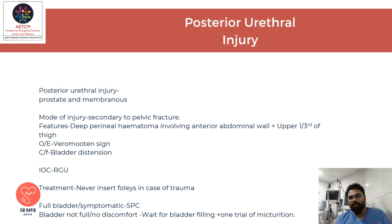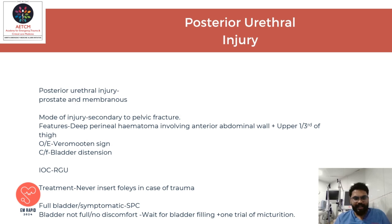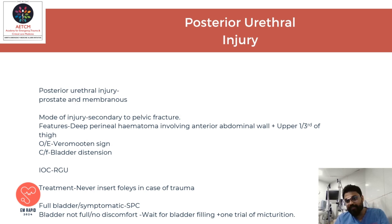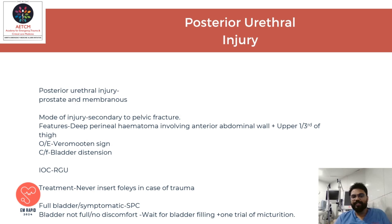The investigation of choice for posterior urethral injury is retrograde urethrogram. In the setting of trauma, never insert a Foley catheter if you are suspecting a urethral injury. If the patient has a full bladder or is symptomatic, you can consider suprapubic catheterization. If the bladder is not full and the patient shows no discomfort, you can wait for the bladder to fill and give one trial of catheterization.